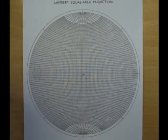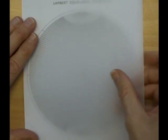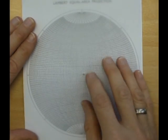Now take the tracing paper, lay it over the StereoNet and push it on through the drawing pin.